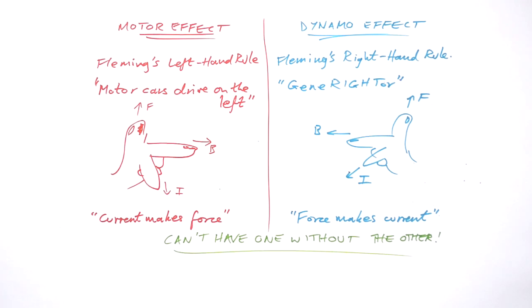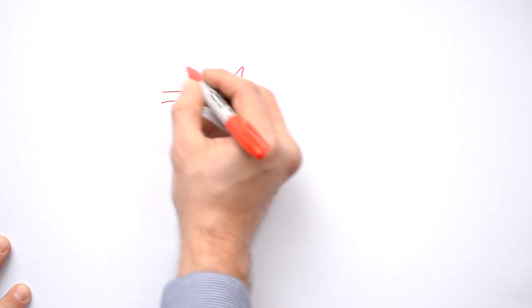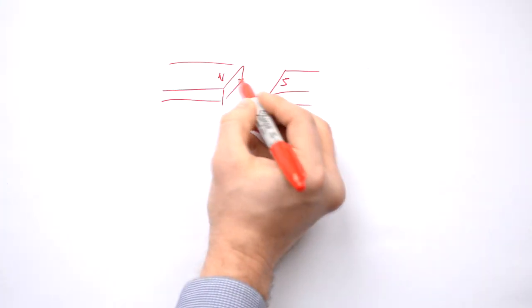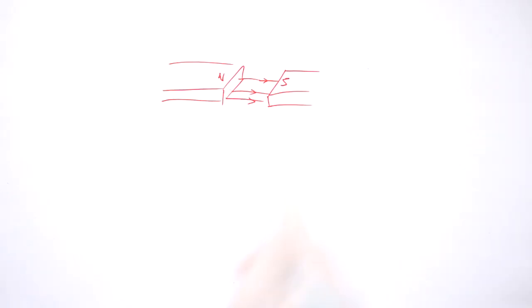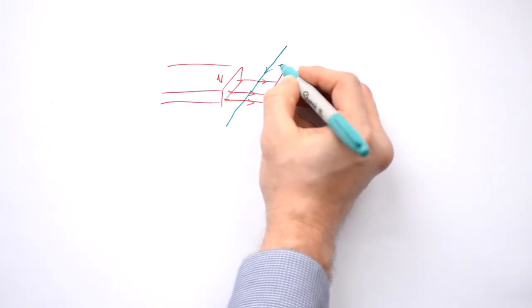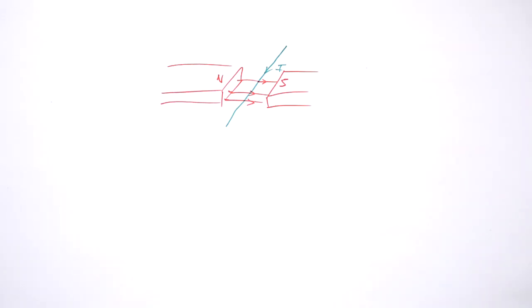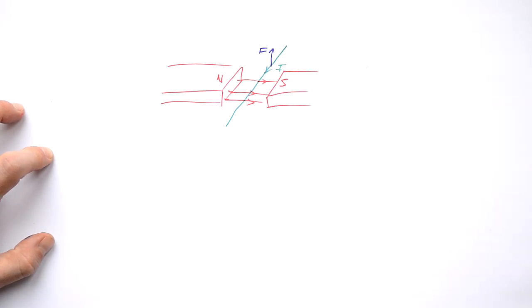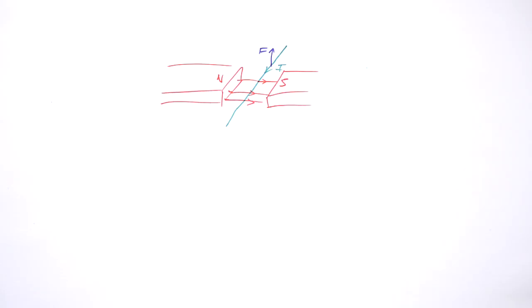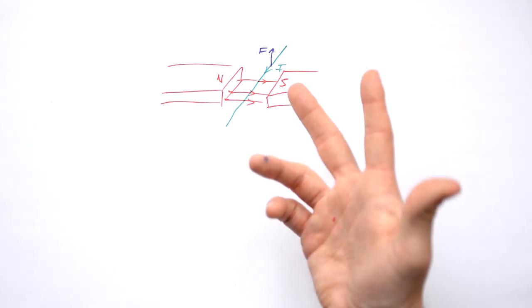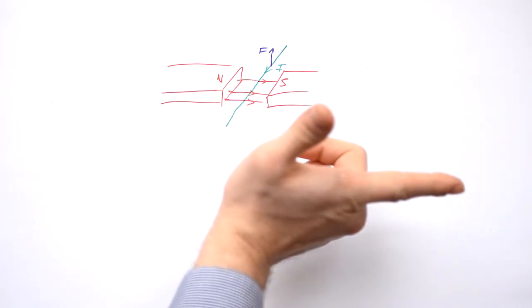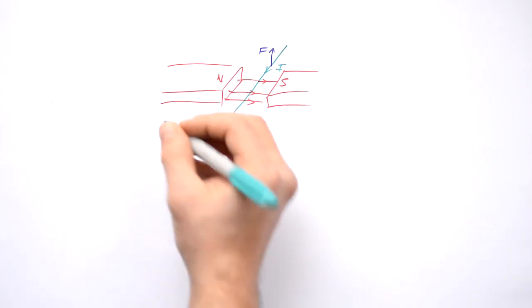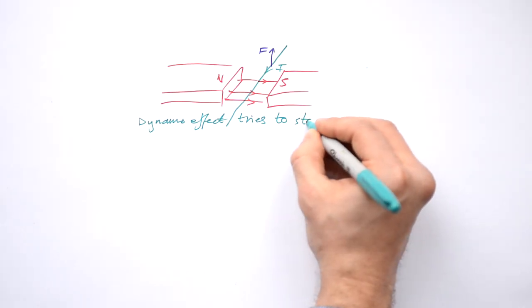It does make sense if we think about it. Let's go back to our magnets with a wire in between. We have a north and a south pole, so our magnetic field is going in that direction. We have a wire that is part of a circuit, with a current going in that direction. According to Fleming's left hand rule, that produces a force going upwards. But now we have a wire moving through a magnetic field — so we also have the dynamo effect. Using Fleming's right hand rule, with the field going to the right and force going upwards, our second finger goes back the other way. The dynamo effect tries to stop the motor effect.